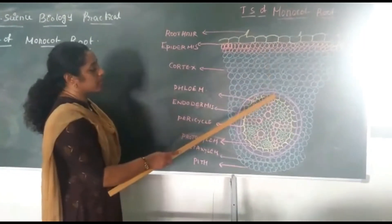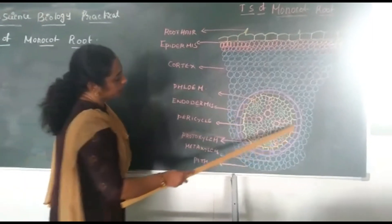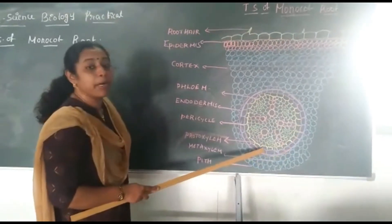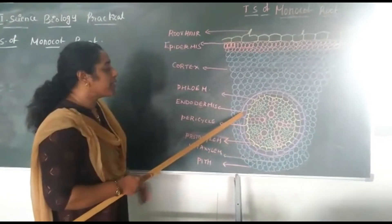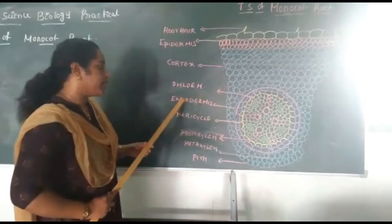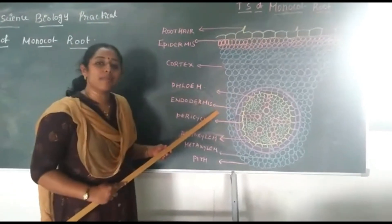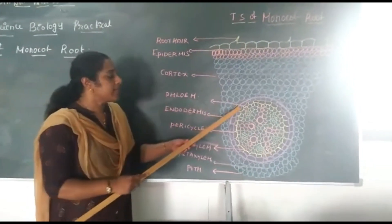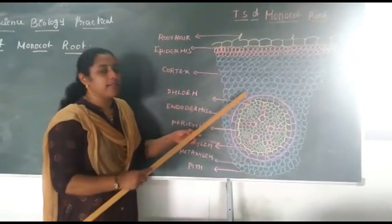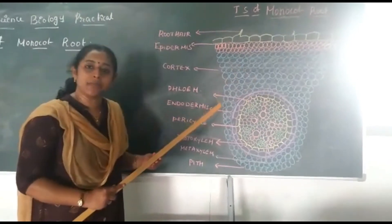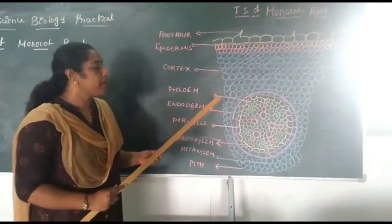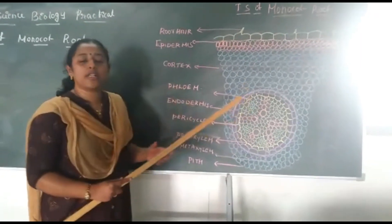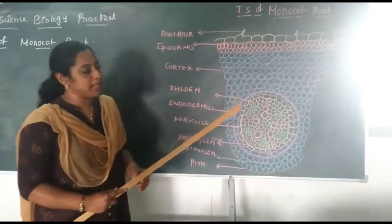After the cortex, the next layer is called Endodermis. I have represented Endodermis in purple color. Endodermis is normally made up of barrel-shaped parenchyma cells. But in certain cells you can find a thick deposition of Casparian strip, which will prevent the absorption of water and also protect the vascular tissue from any poisonous material.